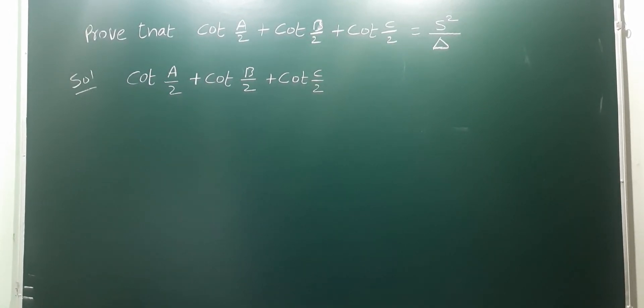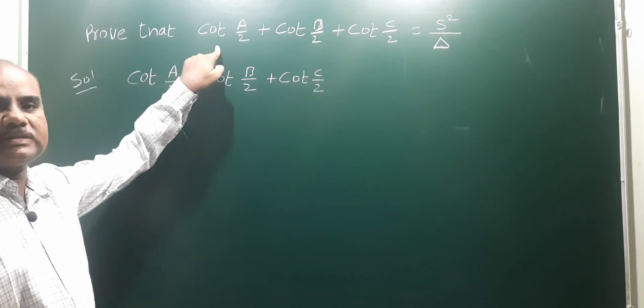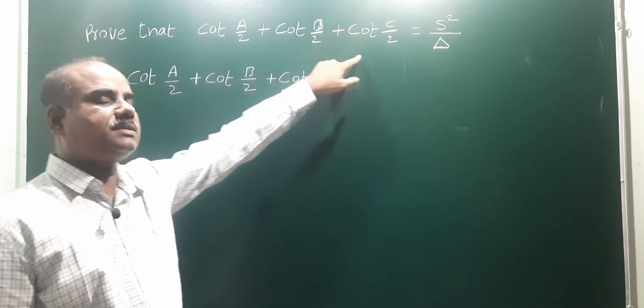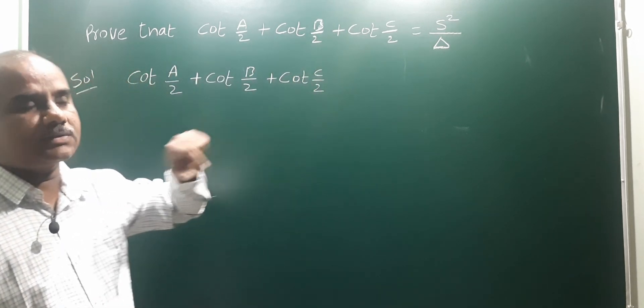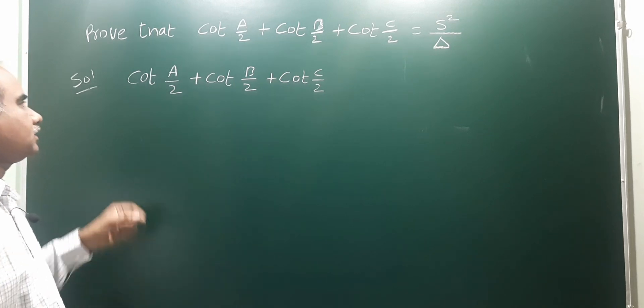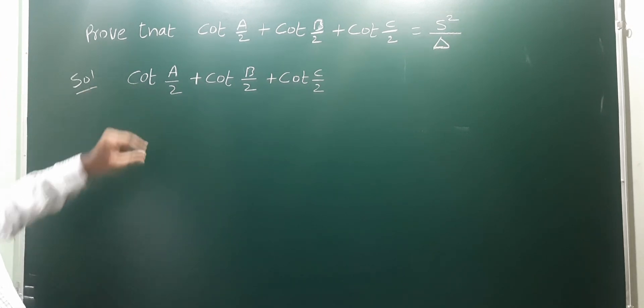Okay, next one. Prove that cot A/2 + cot B/2 + cot C/2 equals s²/Δ. We have to prove this, so we take the LHS.